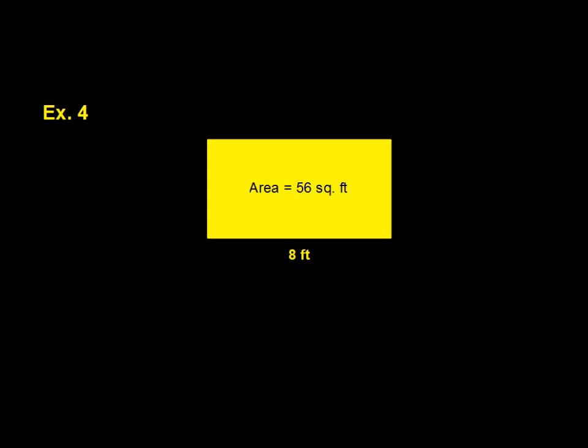So in this case, we have 56 square feet, which would be feet times feet, divided by 8 feet. So we can start dividing. 56 divided by 8 is 7.